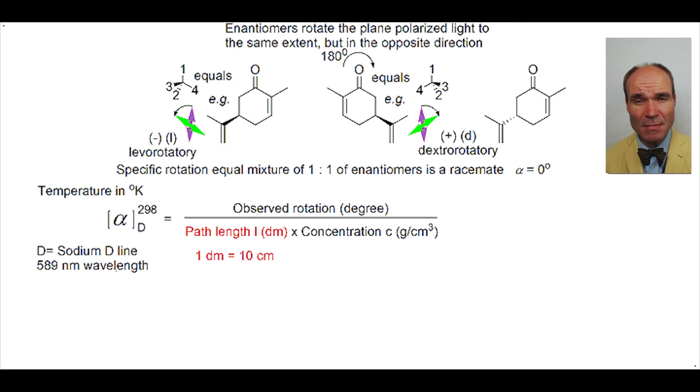Note the path length is measured in decimeters, where one decimeter equals 10 centimeters. This can be abbreviated as alpha over LC.